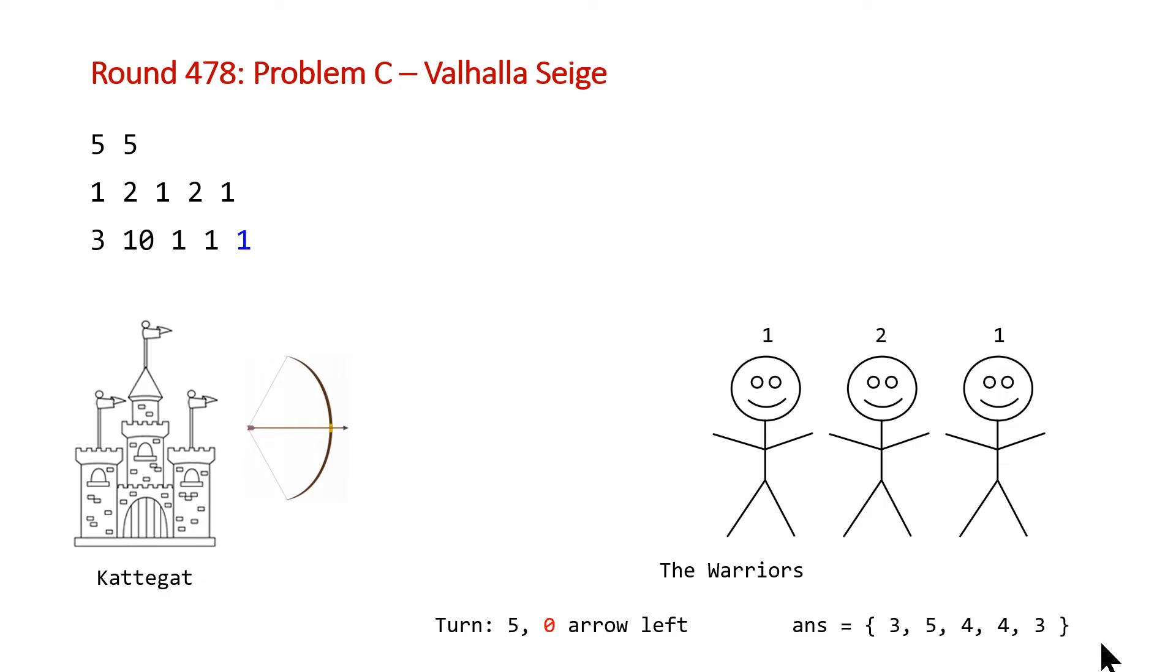So this is the gist of the problem. And so if you were to just implement a naive algorithm that did what we just did, it would time out due to the constraints of the problem. Note that the number of arrows can be all the way up to 10^14, which is going to be too much for us to just iteratively do this.